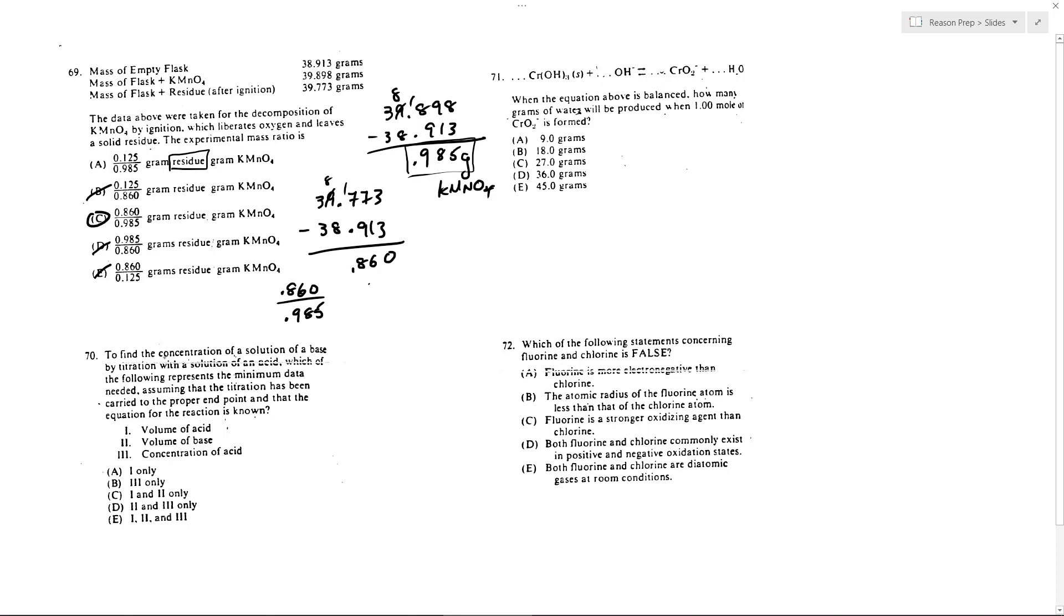We know we want to find the concentration of a solution of a base. So we're looking to find Mb. And if you think about the equation that we use in titrations, what is it? You need M-A-V-A equals M-B-V-B. And this basically tells you what you're going to need in order for the calculation to work. You're going to need the molarity of the acid that you're titrating with. You'll need the volume of acid that you would use to get to the endpoint. You would need the volume of the base that you started with. And so with those three values, you'll then be able to solve with this equation to find the molarity of the base.